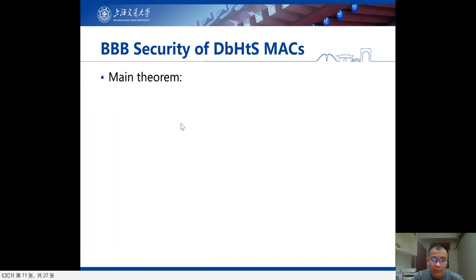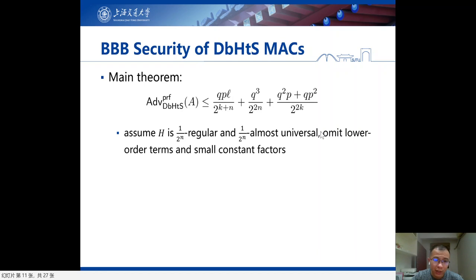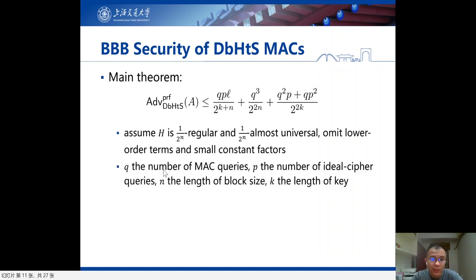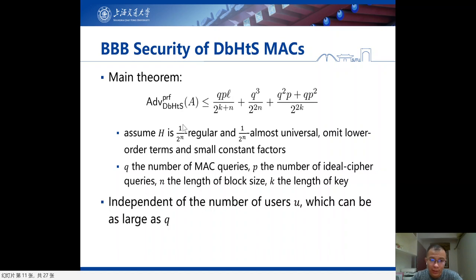This is the main theorem in our paper. For simplicity, we assume H is 1/2^n-regular and 1/2^n-almost universal, and omit lower-order terms and small constant factors. Here Q is the number of MAC queries, P is the number of ideal cipher queries, n is the block size, and K is the key length. As can be seen in our theorem, this bound is beyond-birthday bound with respect to both Q and P. Moreover, this bound is independent of the number of users, which can be as large as Q.